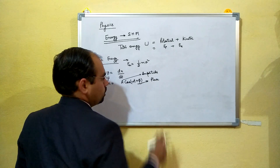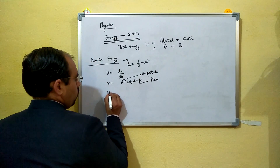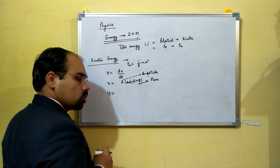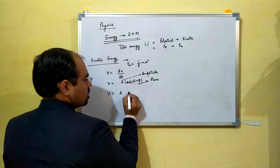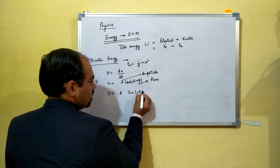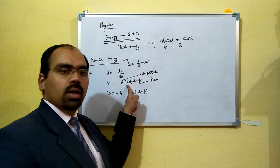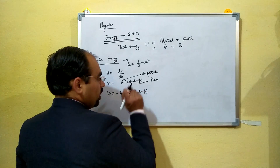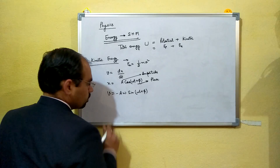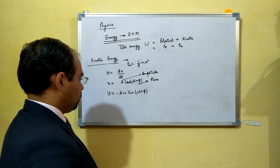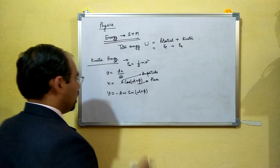Now let's get the value of v. v is equal to dx by dt, so we differentiate our function. The differentiation of cosine is minus sine, along with the differentiation of its argument, which gives ω. So v is equal to minus A·ω·sin(ωt + φ).